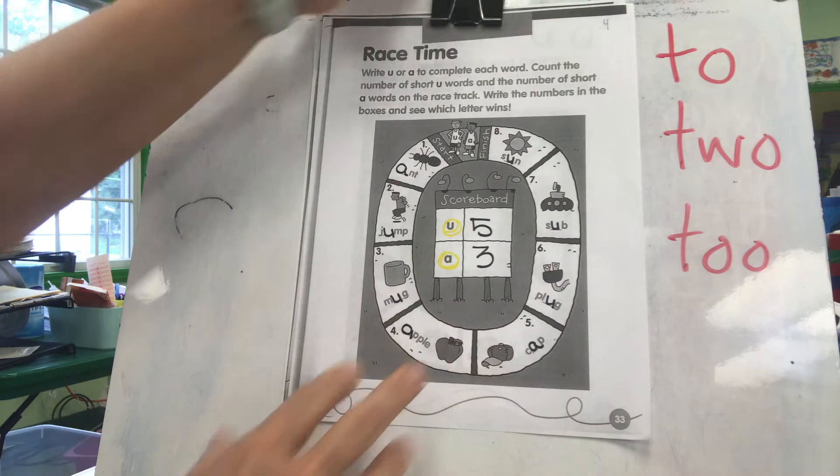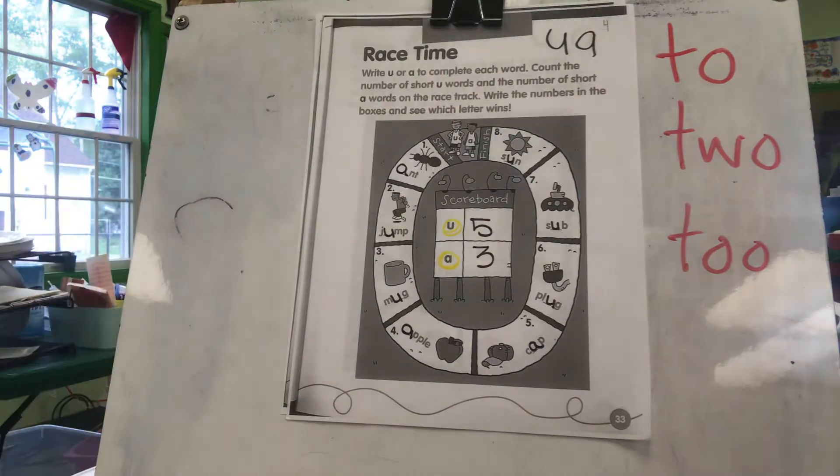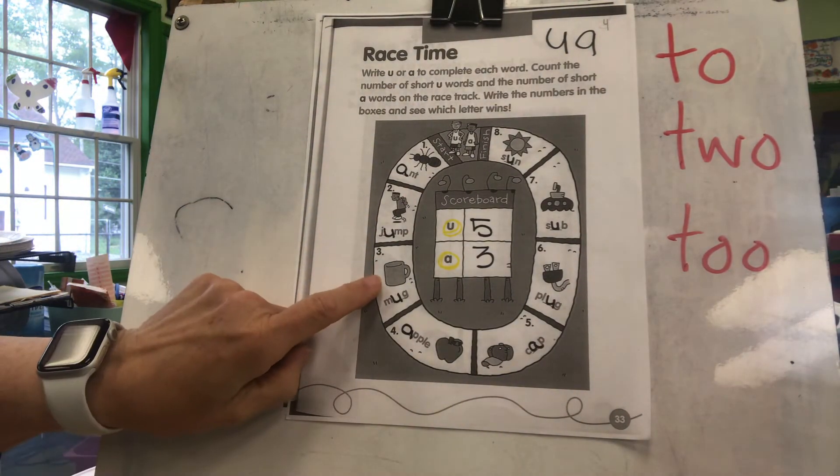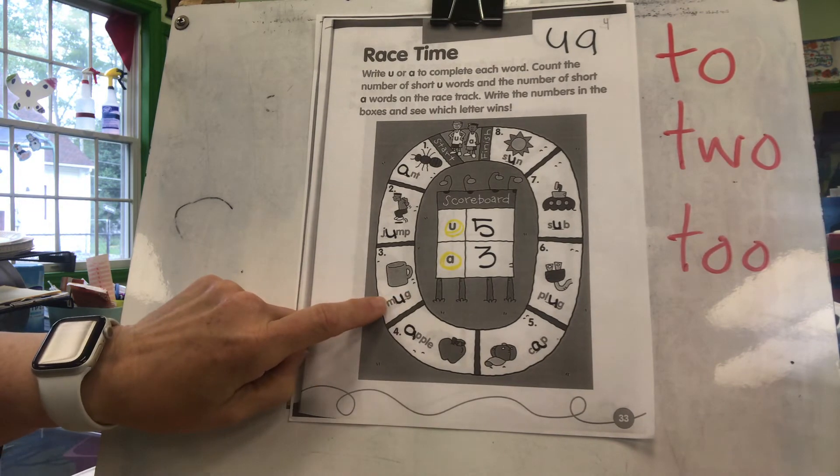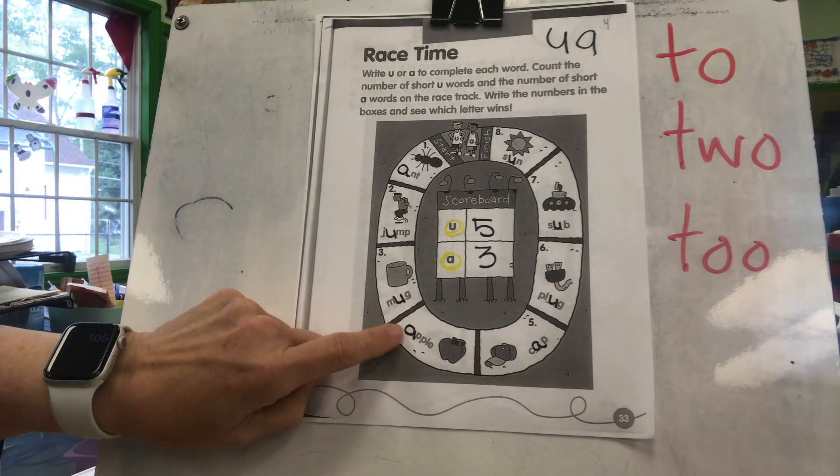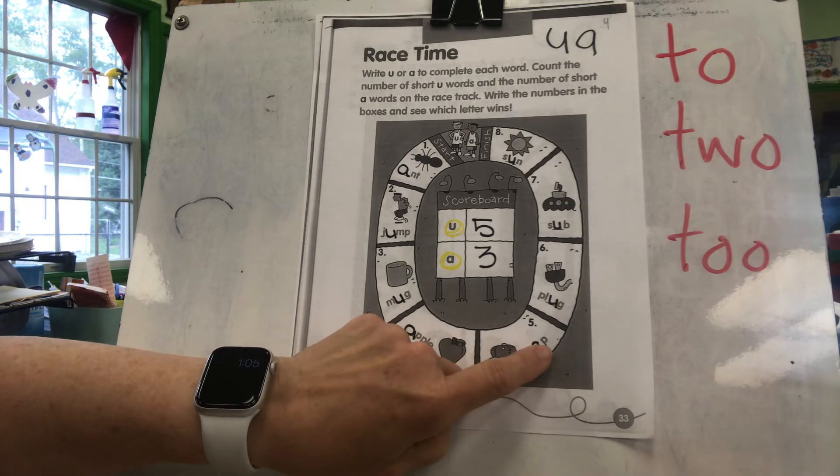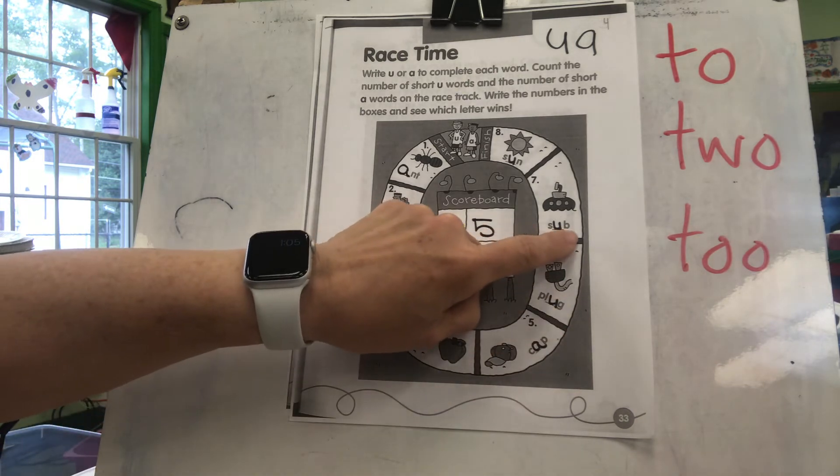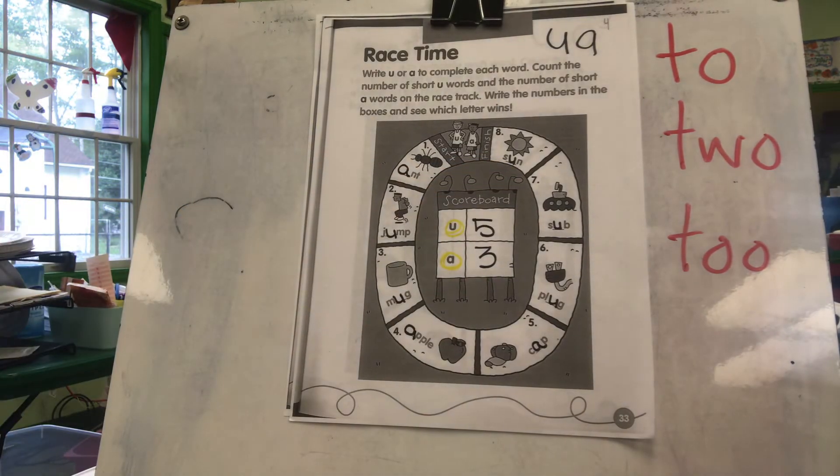One, two, three, look and see. Let's see who's the winner, the U or the A. We did ant and jump together. Now this could be a cup, but it would have to begin with a C. So it's a mug, not a mag - no A there, U, mug. This is an apple, not an uphill. This is a cap, not a cup. This is a plug, not a plaig. This is a sub with a U, sub, but not a sab. And that's the sun, not a san.